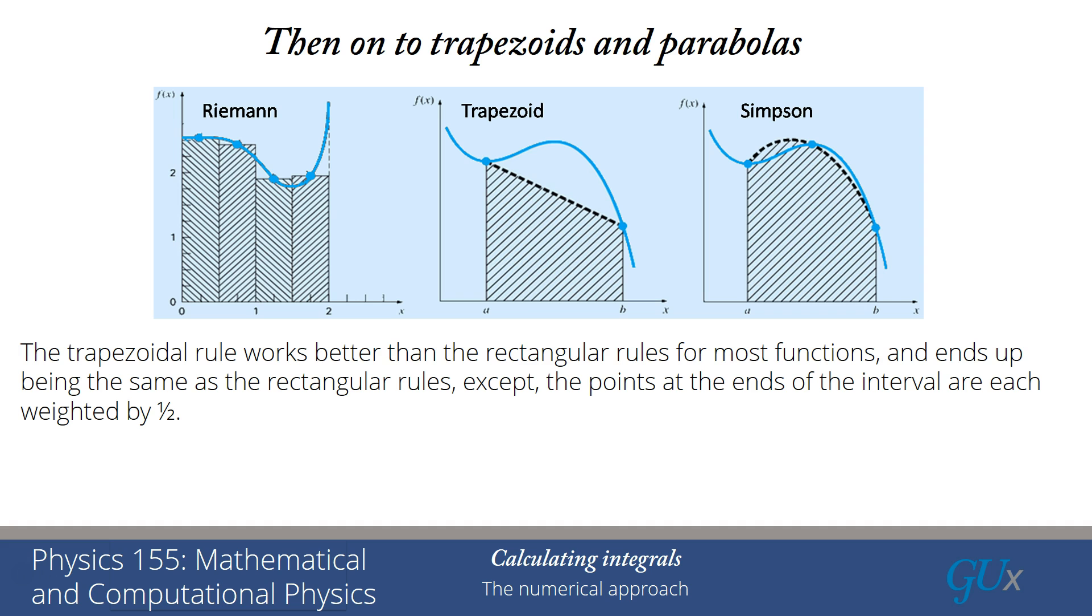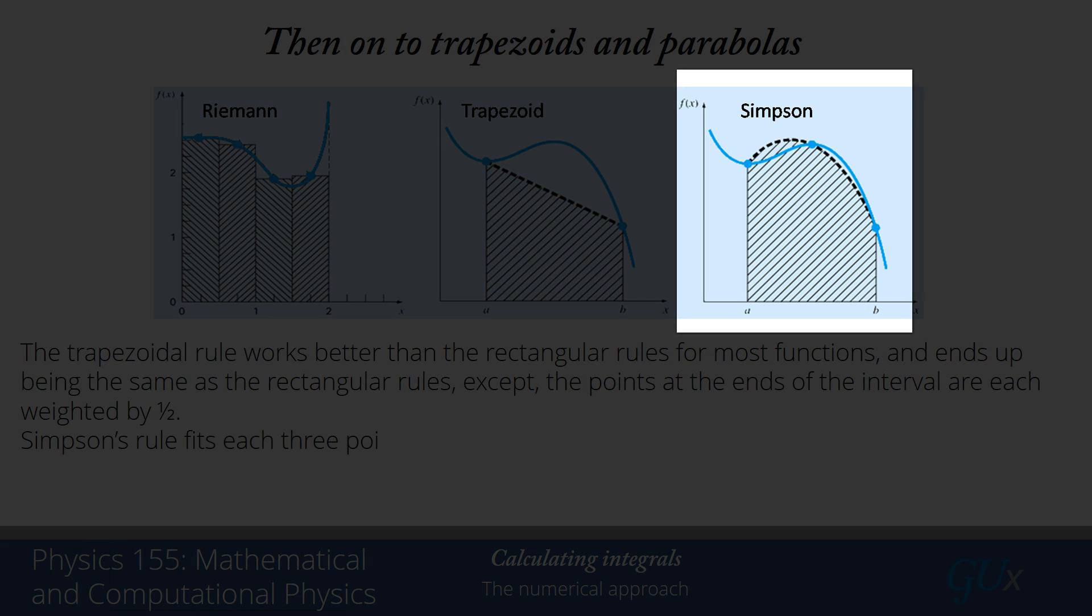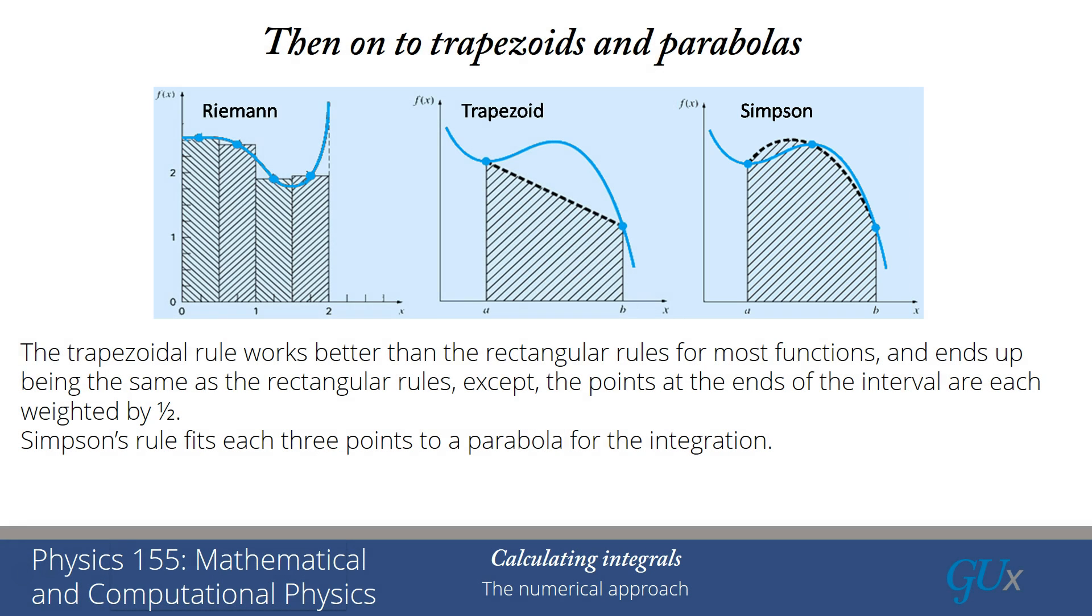Now, the final result on the right-hand side is the so-called Simpson's rule. And in that case, what we're doing is we're fitting the three points of the function to a parabola for doing the integration, and that will integrate exactly any functions that are constants, linear, or parabolas.